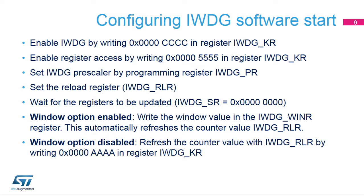The IWDG software start is configured in a few steps. The first step is to write the key register with value 0x0000CCCC, which starts the watchdog. Then remove IWDG register protection by writing 0x00005555 to unlock the key. Set the IWDG prescaler in the IWDG_PR register by selecting the prescaler divider feeding the counter clock. Write the reload register, IWDG_RLR, to define the value to be loaded in the watchdog counter. After accessing the previous registers, it is necessary to wait for the IWDG_SR bits to be reset in order to confirm that the registers have been updated.